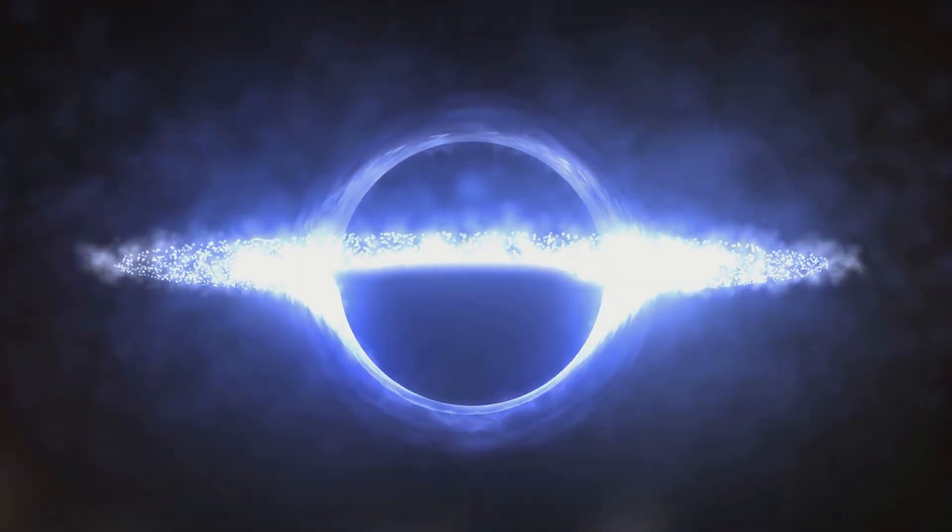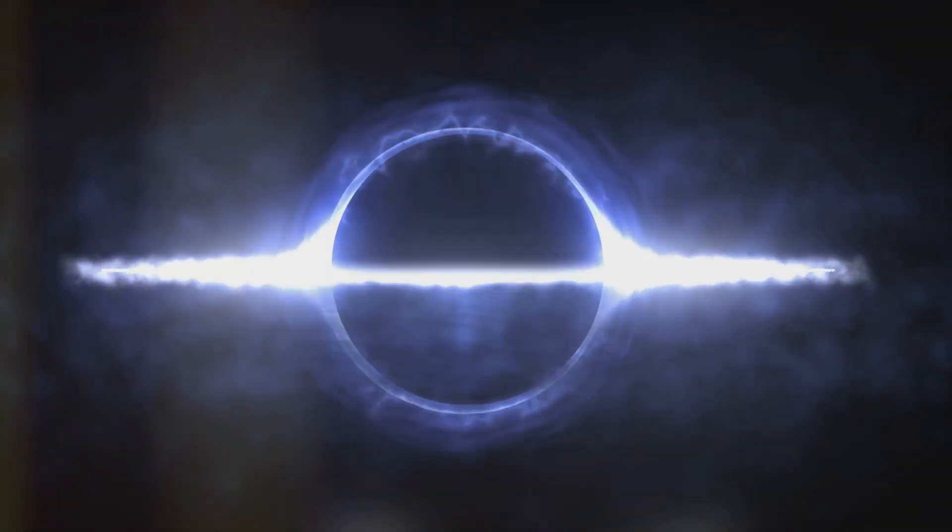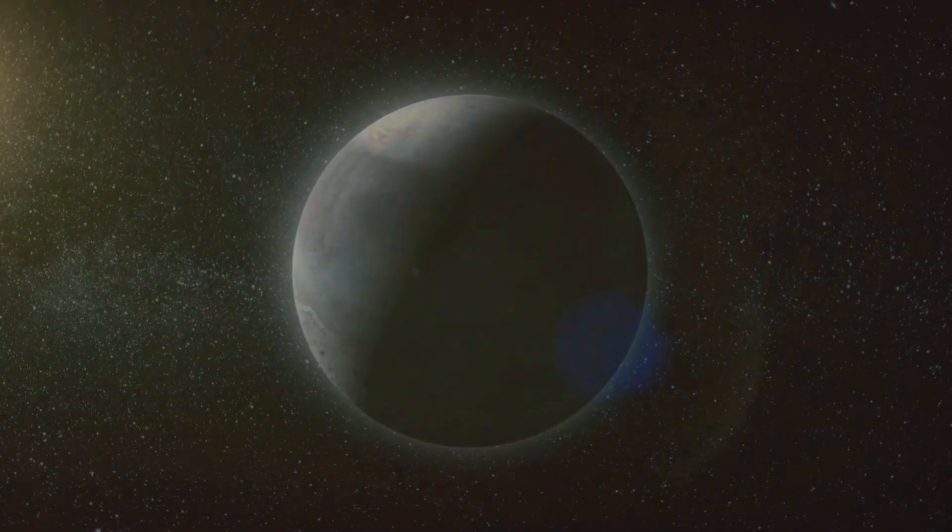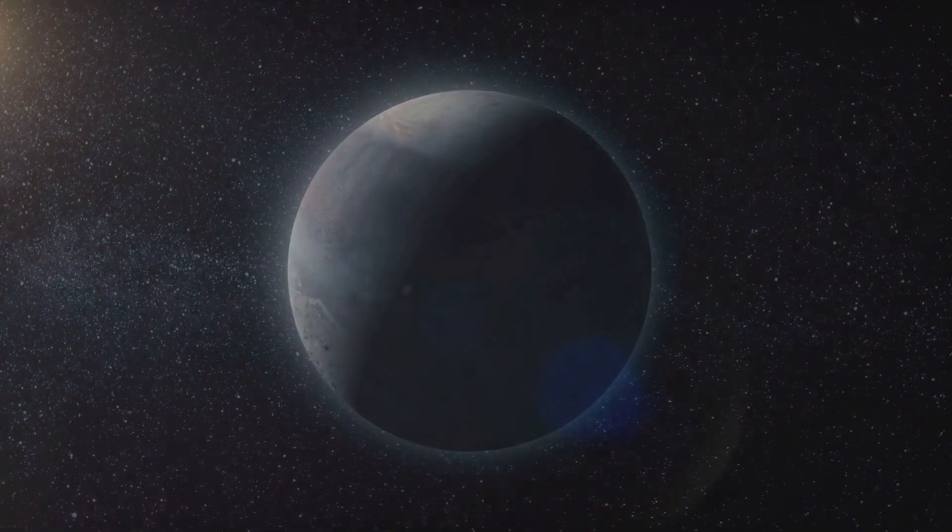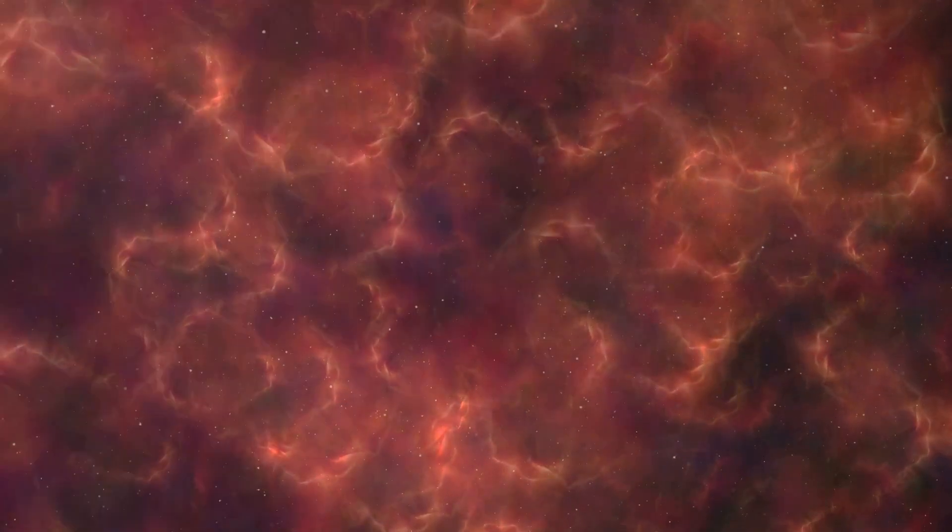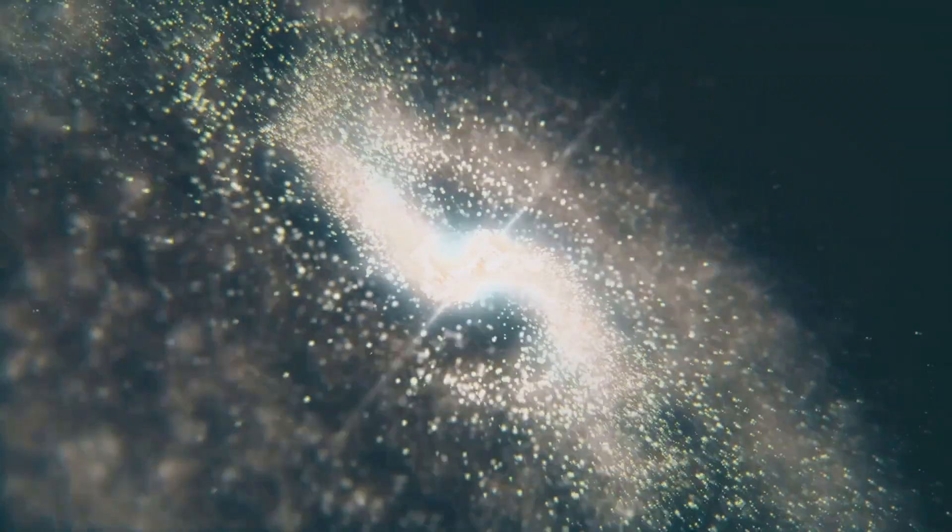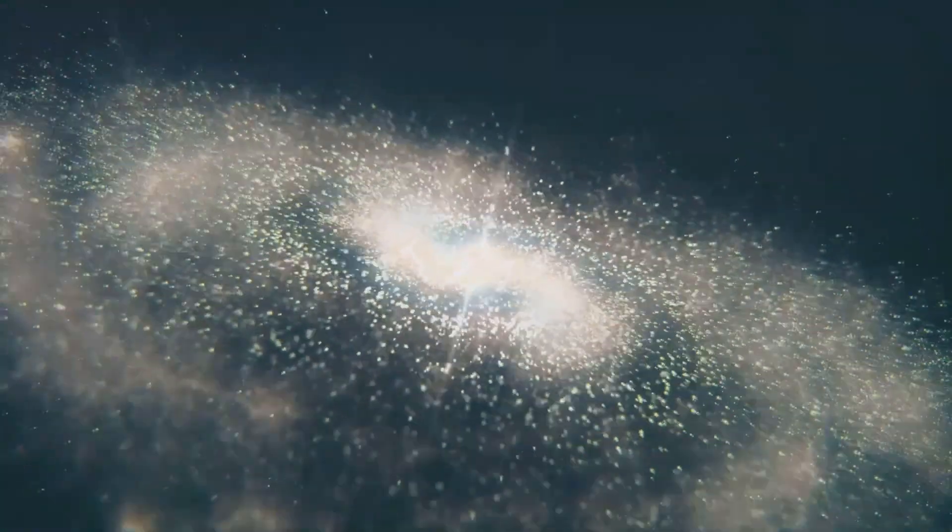As black holes evaporate, the universe will enter the Dark Era. This era is characterized by vast emptiness and unimaginable timescales. Only a sparse sea of fundamental particles like electrons, neutrinos, and photons will remain. The universe will become incredibly cold and diffuse. The temperature will approach absolute zero. The expansion of space will continue, carrying these particles further and further apart.